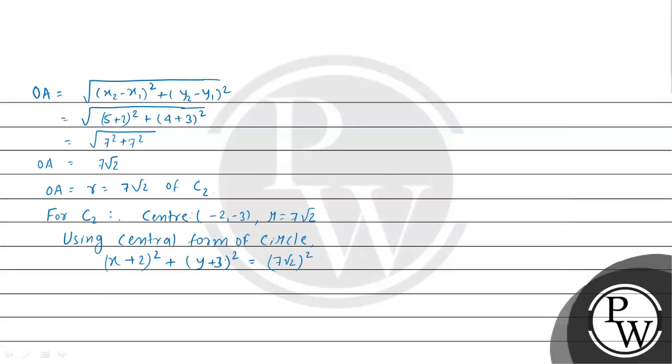Expanding the whole square terms: x² + 4 + 4x + y² + 9 + 6y = 7² × 2, which is 49 × 2 = 98.